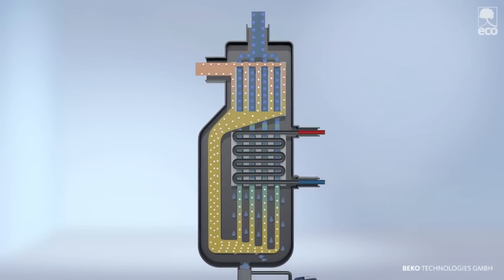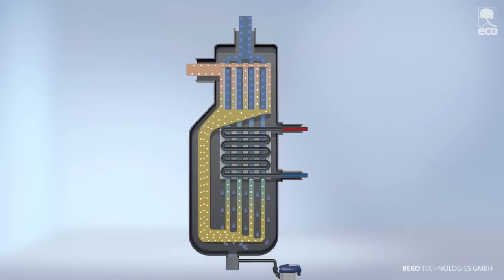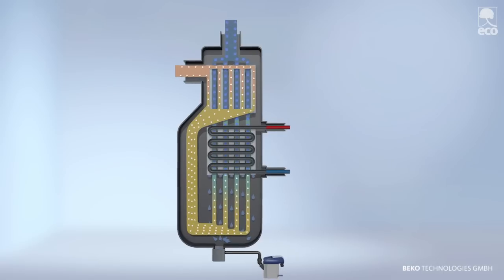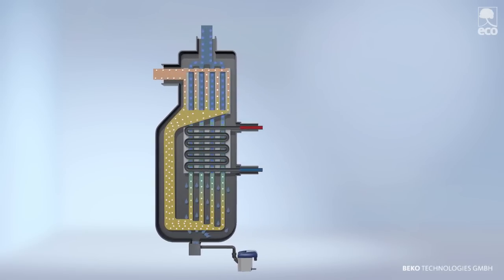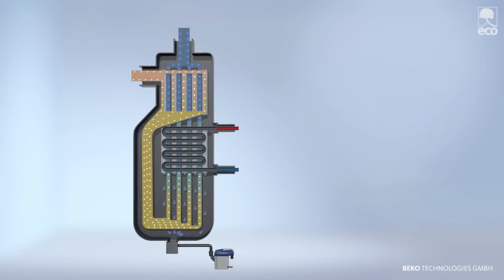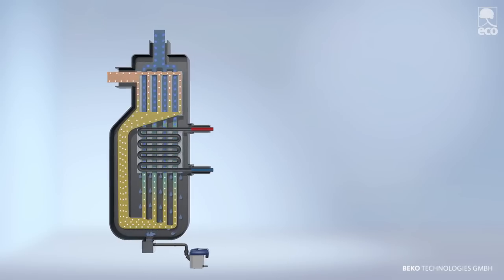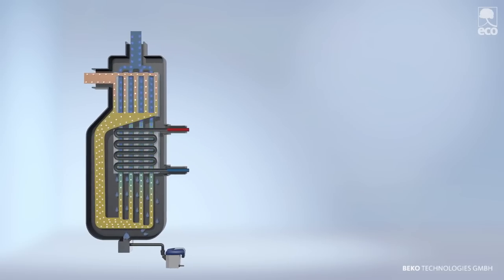Thanks to the streamlined construction, the compressed air passes almost resistance free through the vertical heat exchanger without noticeable deflection. This minimizes pressure loss, thus lowering the system's energy consumption.